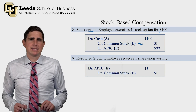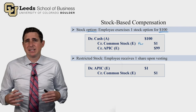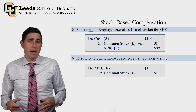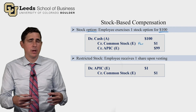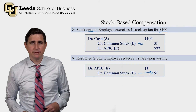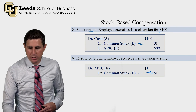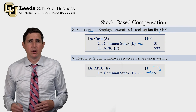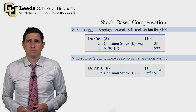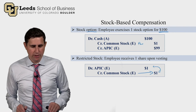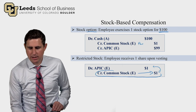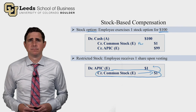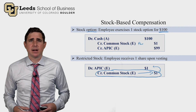Restricted stock is simpler — instead of an option, the employee simply receives a share at the end of three years. Since there is now one more share outstanding, we reclassify $1 (the par value) from the APIC account into the common stock account. There's no effect on total equity; the reclassification just allows investors to look at the common stock account, divide by par value, and know how many shares are outstanding.